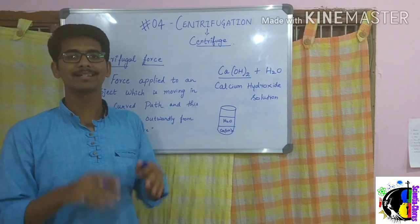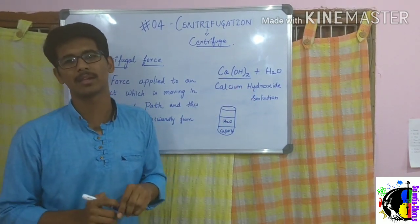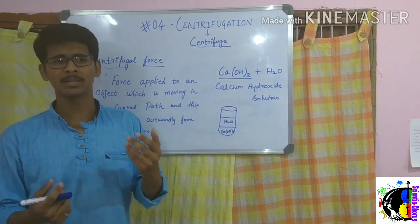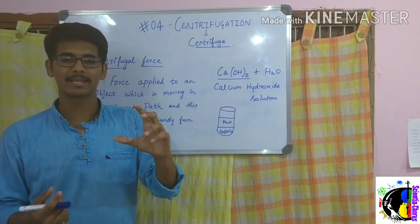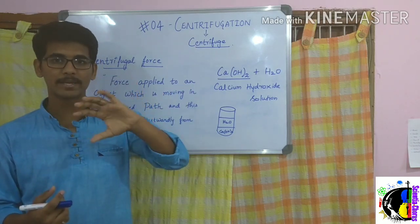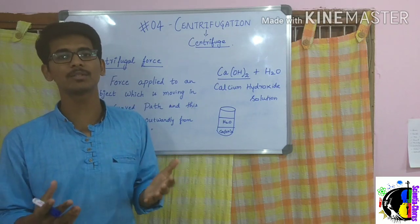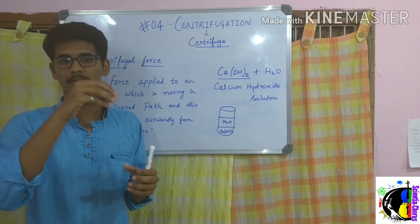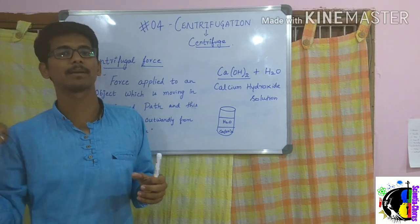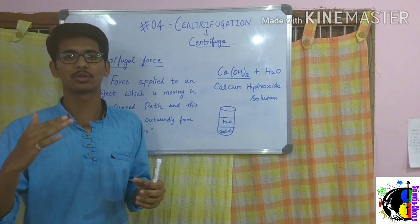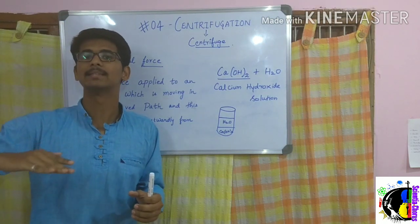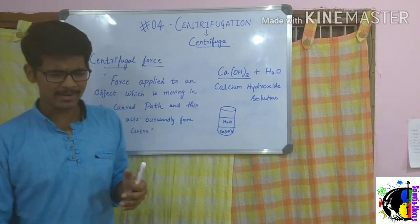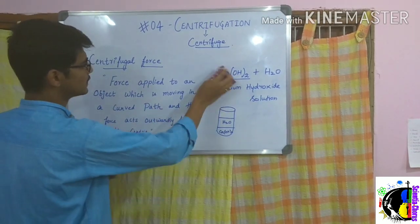This is how we separate the components. As an application, consider cream — a dairy product obtained from milk. To separate cream from milk we use centrifugation. Since the density of cream is more, when the milk is placed in the centrifuge and rotated at a very high speed, the cream, being denser, settles down while the lighter liquid part goes up.